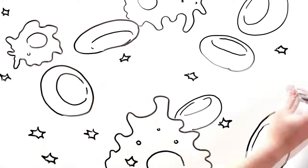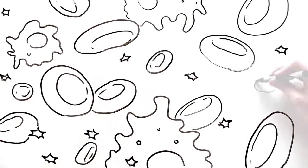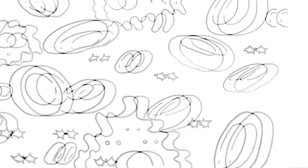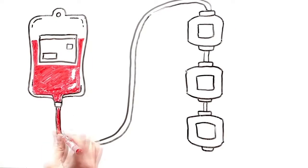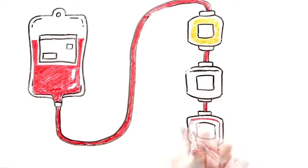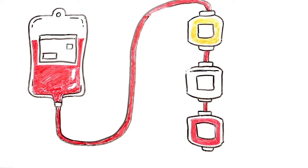When you give whole blood, red blood cells, white blood cells, platelets, and plasma are collected together. Then, your donation goes to a lab where it's separated into its different parts.